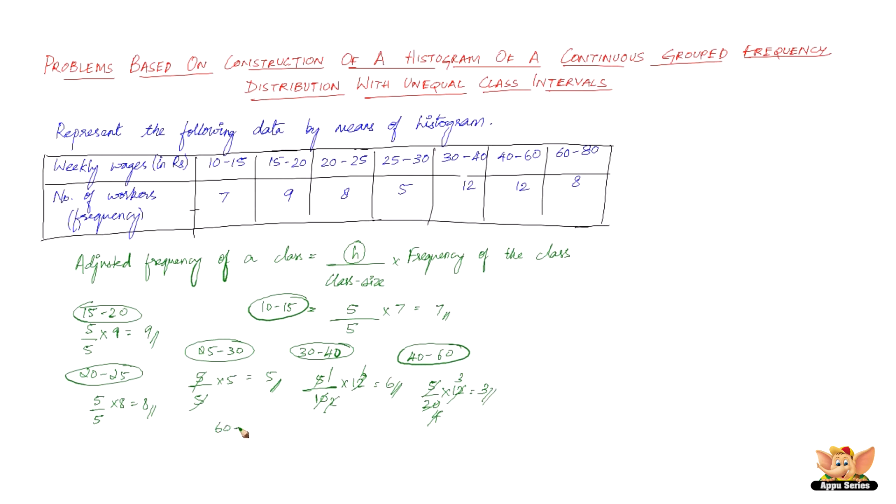And then the final one which is 60 to 80. We have 20, the class size. So we have 5 by 20 into 8. So 5 goes 4 times in 20 and 4 goes 2 times in 8. And we have a frequency of 2. And this is the first one.